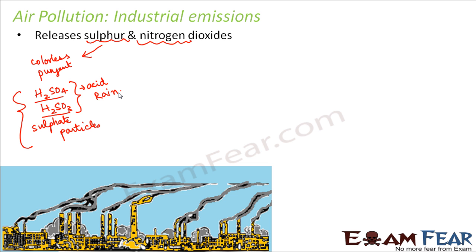Secondly, sulfate particles are extremely tiny, so they can be in the breathable particulate material. When we breathe, large particles cannot enter because the passage in our nostrils is quite small. However, these sulfate particles, being tiny, have a high chance of being breathed in, making it quite possible for them to enter inside our body.